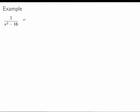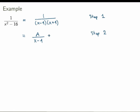The first step is to factor the denominator. In this case it's easy: x squared minus 16 equals the product of x minus 4 times x plus 4. Step two is to write down the partial fraction decomposition in terms of unknowns. In this case the decomposition will be a sum of two terms, one for each linear factor in the denominator, with unknowns a and b as the numerators.